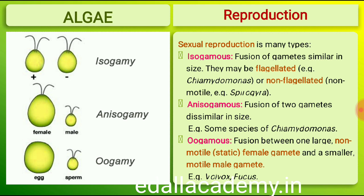Fusion of two gametes dissimilar in size, as in some species of Chlamydomonas, is termed anisogamous. Fusion between one large, non-motile, static female gamete and a smaller motile male gamete is termed oogamous — for example, Volvox and Fucus.